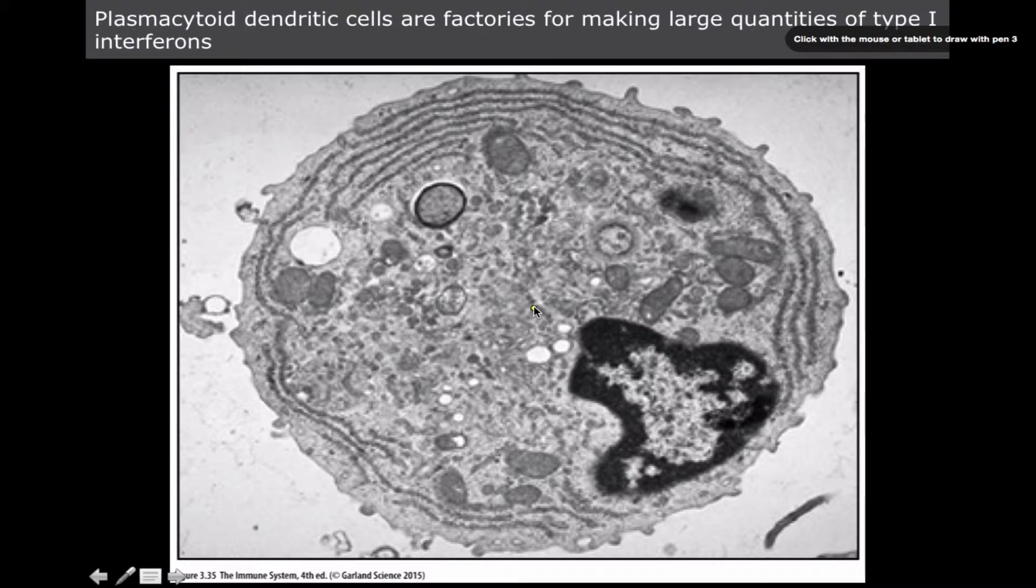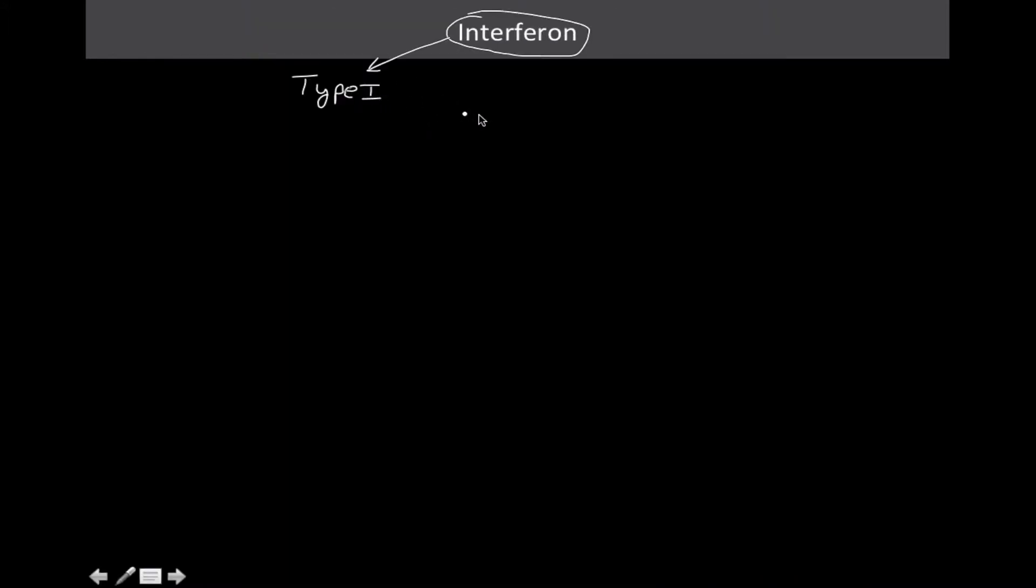So yes, every cell in the body does make type 1 interferon, but plasmacytoid dendritic cells are factories for making large quantities of interferons. They make about a thousand times more interferon than say an epithelial cell or a skin cell. They're very, very like freaks of nature almost. They're part lymphocytes, part dendritic cells. And in this picture here, you can see it's just a giant endomembrane system. The cell was just designed for one sole purpose, and that's producing type 1 interferons.